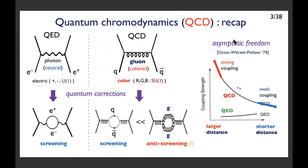Let me start with some brief reminders of quantum chromodynamics. In some sense, QCD is very similar to QED, where matter fields are electrons and positrons interacting through photon exchange. In QCD, we have quarks and antiquarks as matter fields and gluons as gauge bosons. Although the theories look similar, there is an important difference: the photon does not have any charges, while the gluon does. Because gluons have color charge, a gluon can couple to another gluon directly, inducing nonlinear effects that show up in quantum corrections.